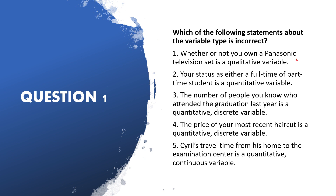Yes, it is — because qualitative means categorical, and you can either say yes or no, which are the two categories. So statement one is correct. Statement two says: 'Your status as either a full-time or part-time student is a quantitative variable.' But quantitative arises from counting or measuring, whereas this statement divides into categories — full-time or part-time — so statement two is wrong.